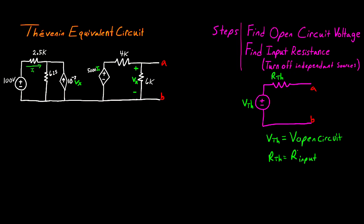So once you find the open circuit voltage, it is equal to the Thevenin voltage and can be directly plugged into your model. The input resistance you find for your circuit is equal to the Thevenin resistance and can also be plugged in directly to your model. And that's all there is to modeling a circuit as the Thevenin equivalent. So now let's get into the example.